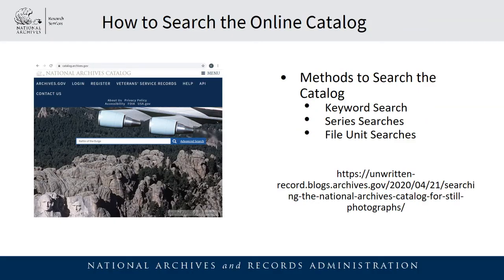Since we've been making so many updates to the catalog, I'd like to cover a few different methods you can search for Still Picture Branch holdings. For all of the information I'm about to cover, you can find a detailed step-by-step tutorial on the Unwritten Record. The main methods of search are keyword searches, series searches, and file unit searches.